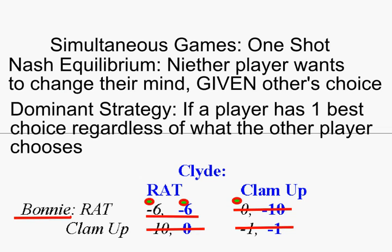In the first video we looked at this idea of a Nash equilibrium, and in this Prisoner's Dilemma we found that there was only one combination of choices where Clyde rats and Bonnie rats, where neither player would want to change their mind or deviate. Another way people describe Nash equilibria is you want to find a place where neither player regrets their choice after the game is over. When Bonnie finds out that Clyde ratted and Clyde found out that Bonnie ratted, neither one of them regrets making their choice because they can't make a choice that would make them better off. That's the Nash equilibrium.